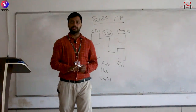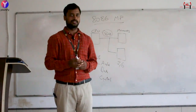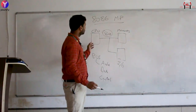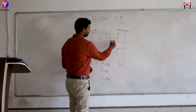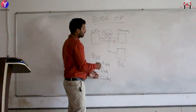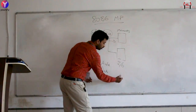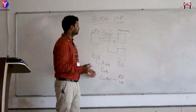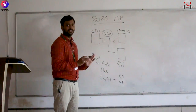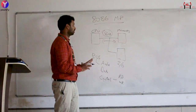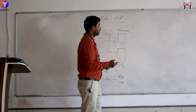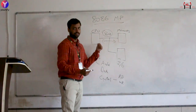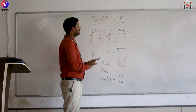The address bus carries the address and picks the location either in memory or in input/output devices. The data bus carries data to and from memory or I/O. The control bus decides whether you want to read or write — it controls the direction of the data bus. This is the basic architecture of any computer. Every component falls under memory, I/O, or processing units.